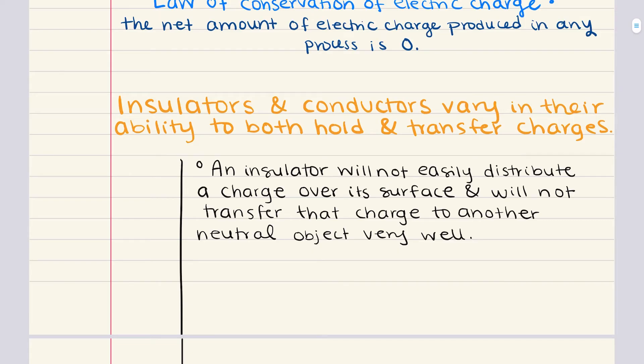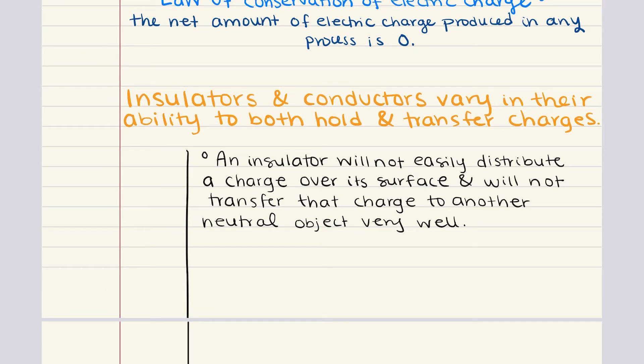Now that we understand the concept of electric charge, let's turn our attention to the materials through which these charges can move. Specifically, let's discuss insulators and conductors, two categories of materials that differ in their ability to hold and transfer electric charge. Insulators are materials that resist the movement of electric charge.